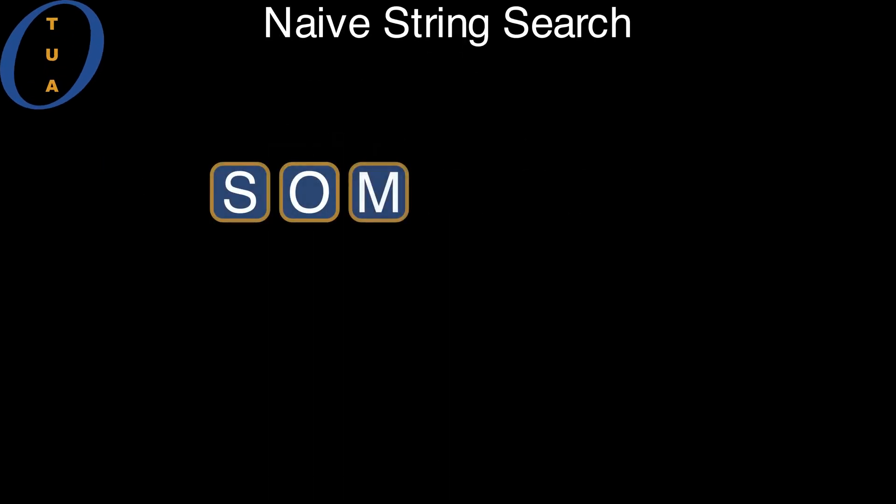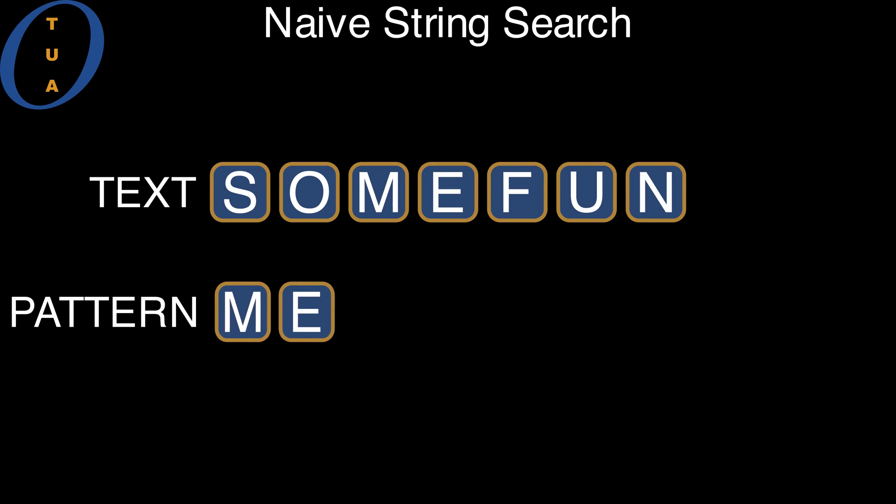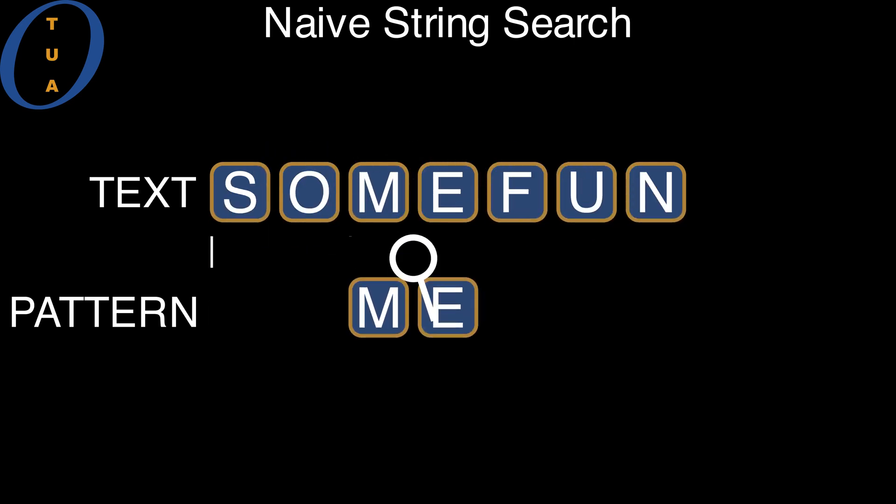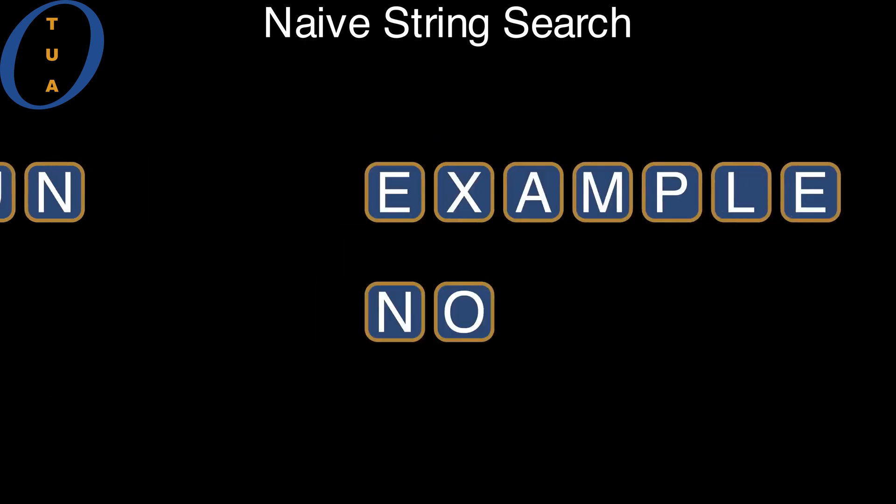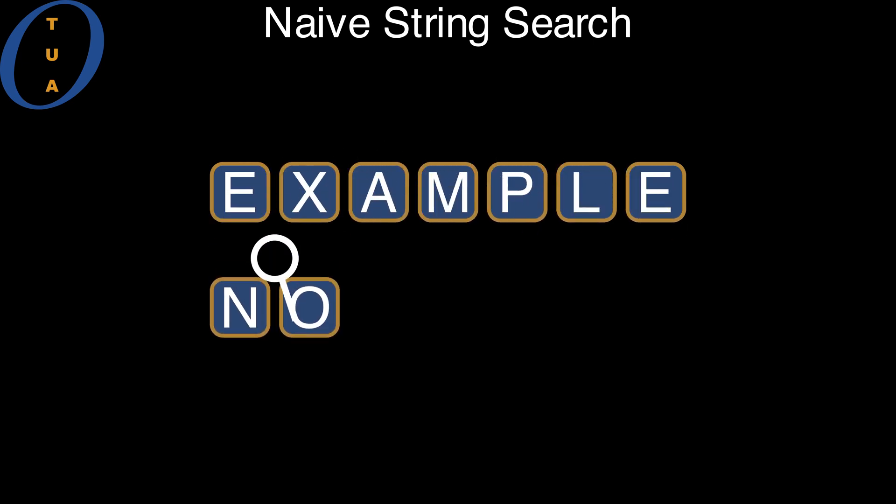The naive string search algorithm is the simplest. It takes as input a string called the text, which is typically on the larger side, and a second string called the pattern, which is typically on the smaller side. It searches for occurrences of the pattern in the text and returns the first offset into the text at which the pattern can be found. Or, if the pattern does not occur in the text at all, it returns a special value, say minus one.